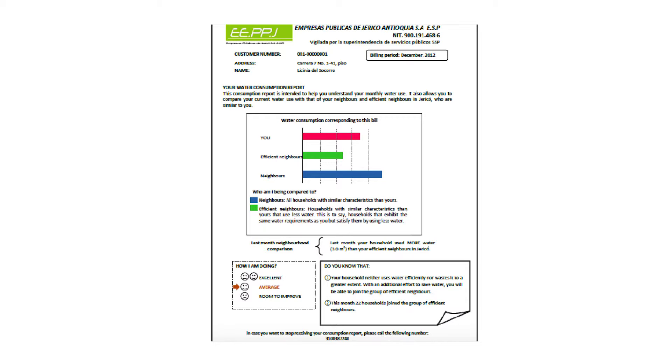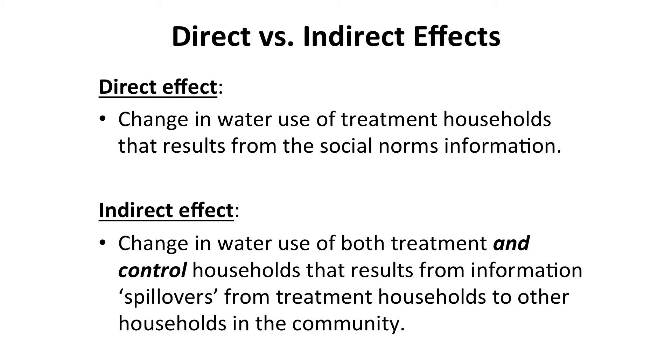The basic idea behind this information treatment is that individuals will conform to the behavior of others. For example, if a household is informed that it is using twice as much water as its neighbors, it will want to reduce its water use to be closer to the social norm of water use in its neighborhood. There are different explanations as to why an individual would want to conform to social norms. An individual may feel guilt for using more water than neighbors, or they may seek social rewards or acceptability by conforming to what others are doing. Another explanation is that an individual may not have complete information about the optimal quantity of water to use, and knowing what its neighbors are doing may help a household determine the right amount.